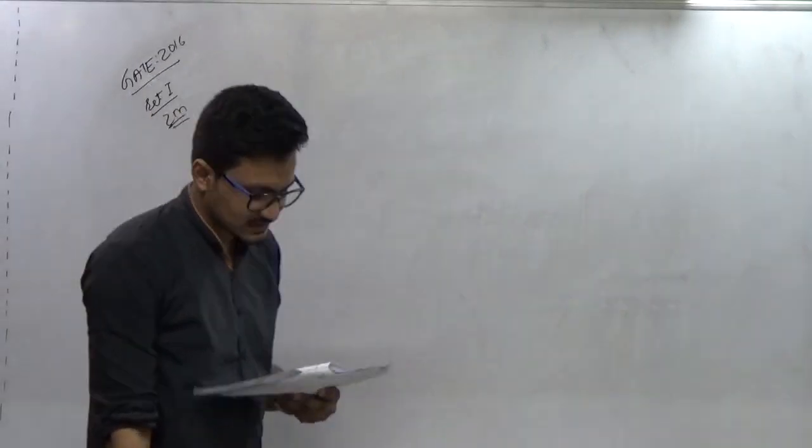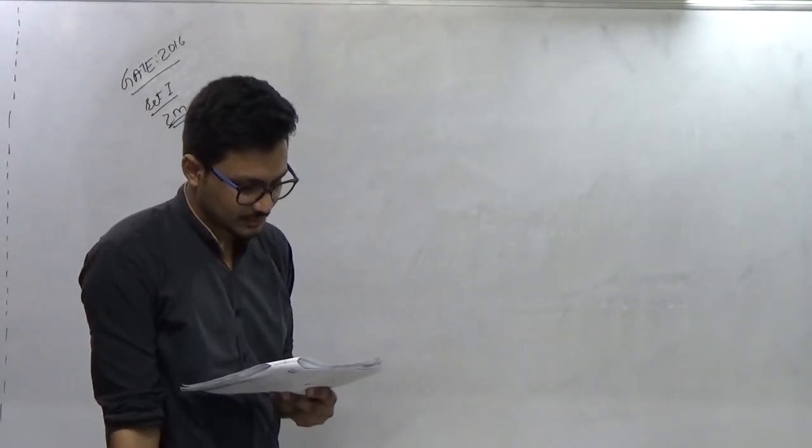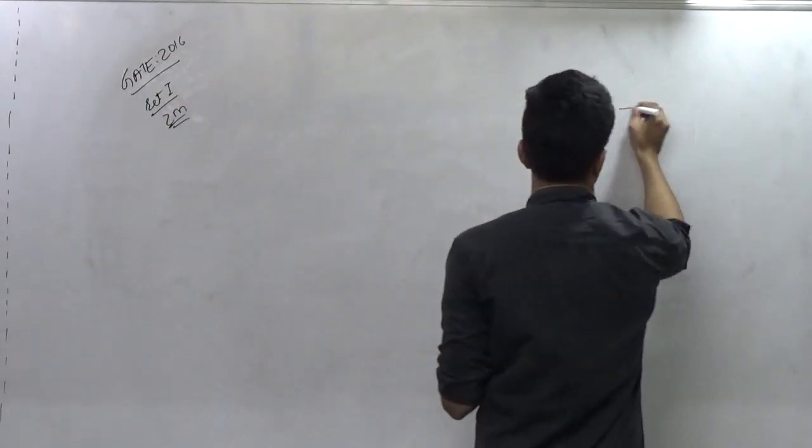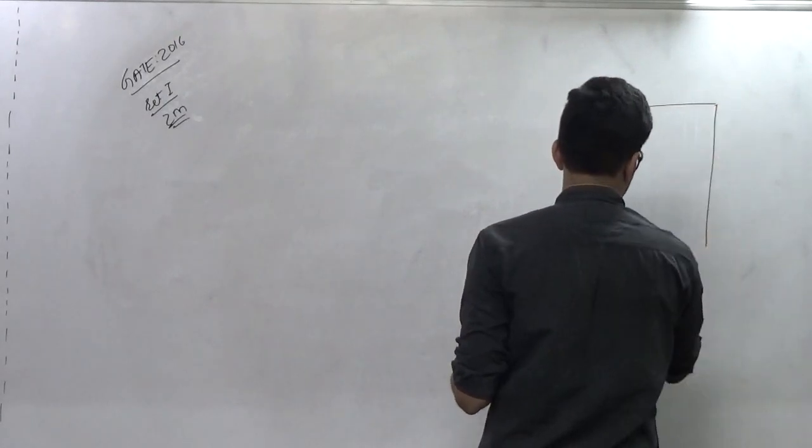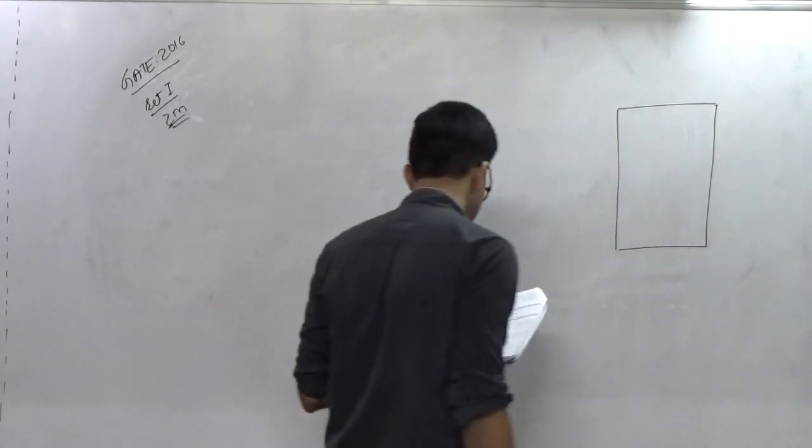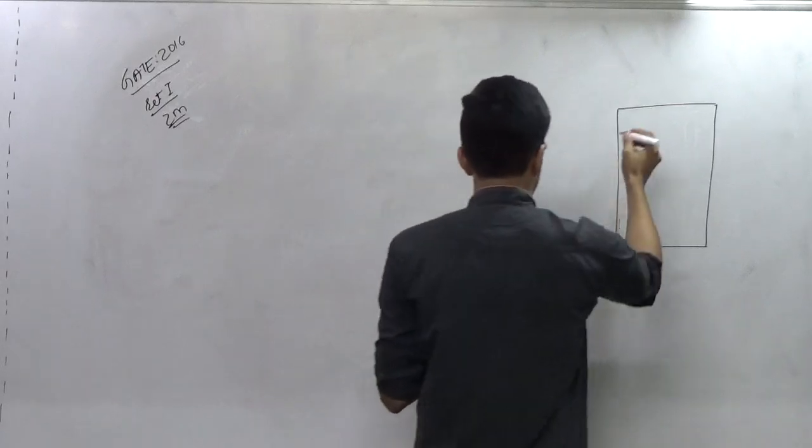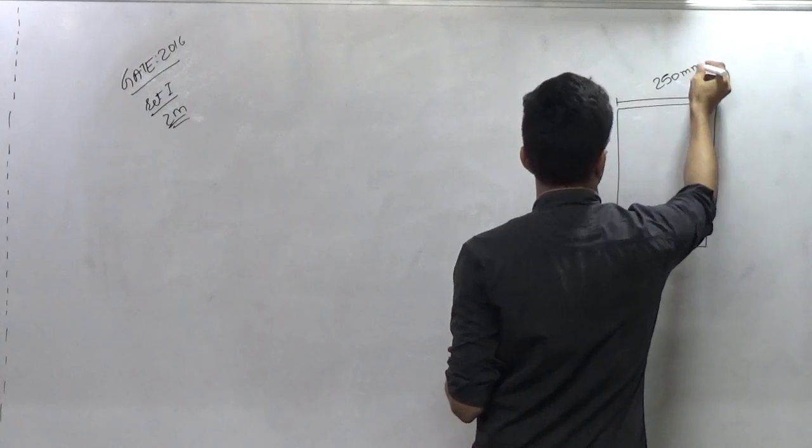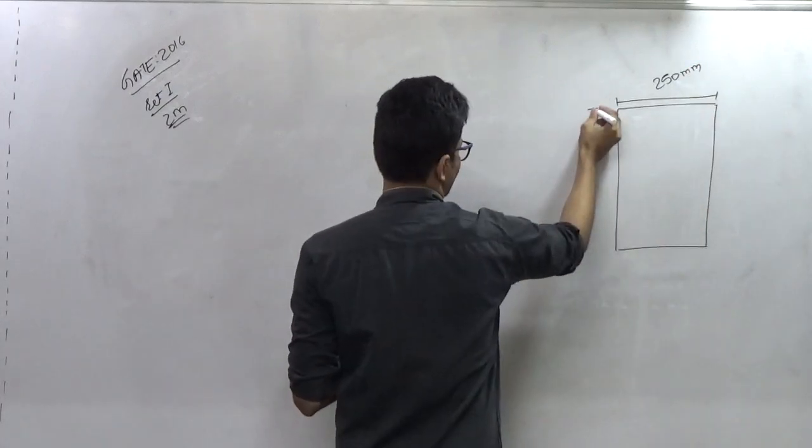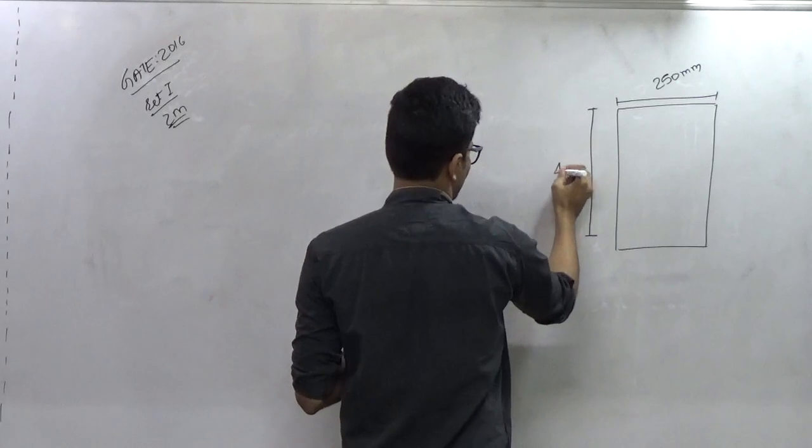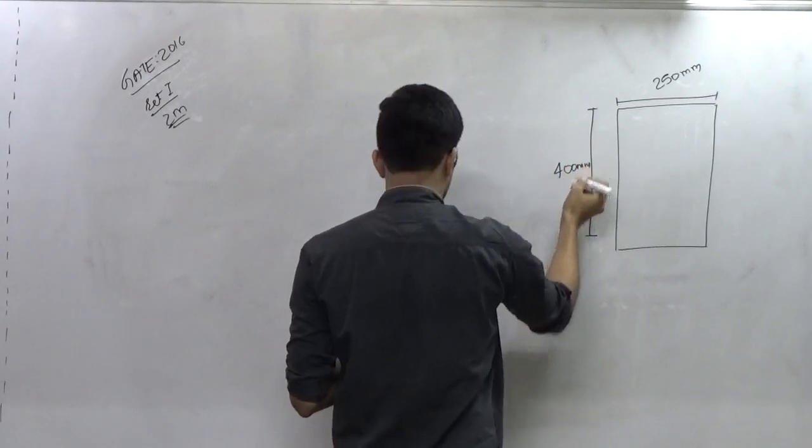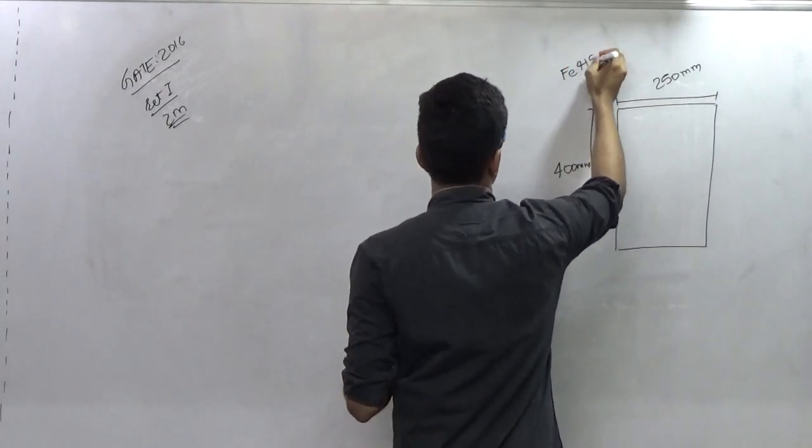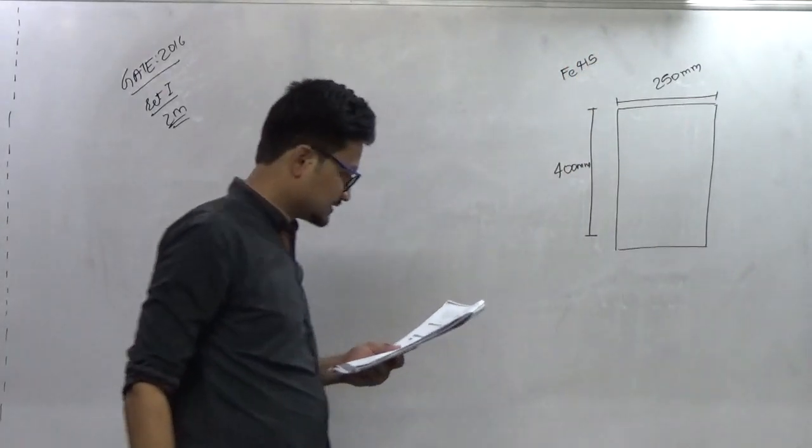A reinforced concrete RC beam with width of 250 mm and effective depth of 400 mm is reinforced with Fe 415 grade of steel. We are supposed to use this as per the provisions.